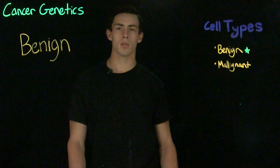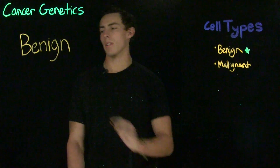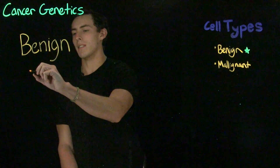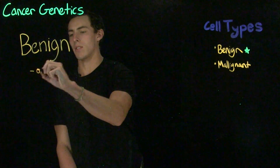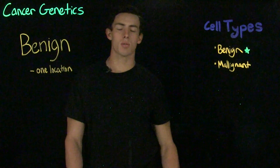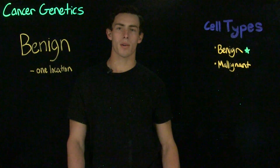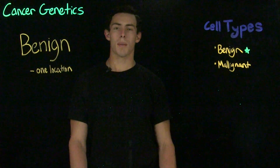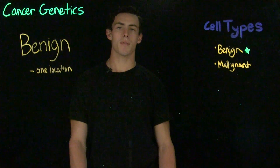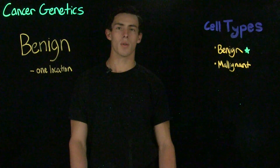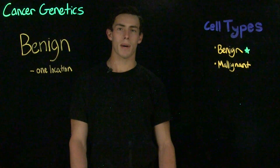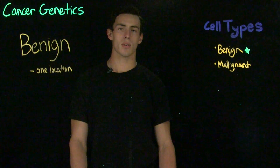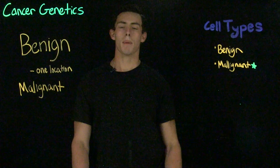So let's look at the two major types of cancerous cells that we have: benign and malignant. With a benign cancer tumor or lesion, it is going to be a type of tumor that stays in one location and thus will not spread or invade other types of tissues. A benign tumor can often be removed by surgical intervention or targeted by specific cancer treatments such as radiation or chemo.